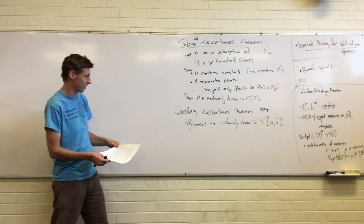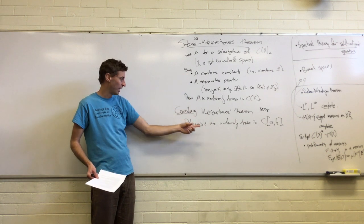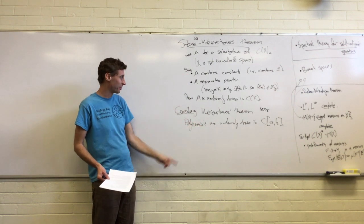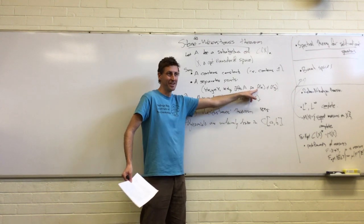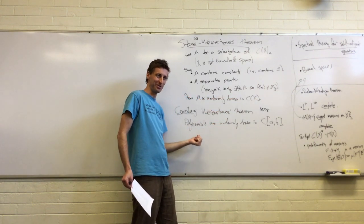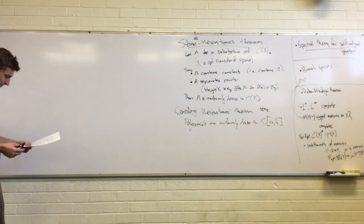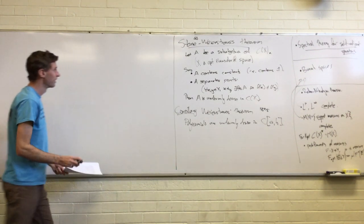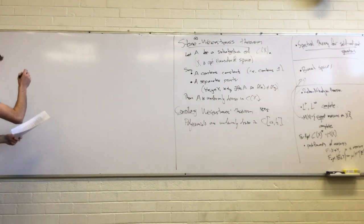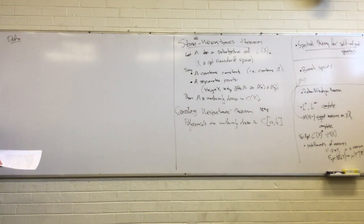And then hopefully we can see that the Weierstrass corollary is an easy consequence. If A is the set of polynomials, it certainly contains the constant function. It's a subalgebra - you can multiply and add functions pointwise. And it easily separates points: just the identity function p(x) = x separates everything. Okay, so let's see the proof. We'll have a couple of definitions, put up some lemmas, prove the theorem using the lemmas, and then work our way through the lemmas.